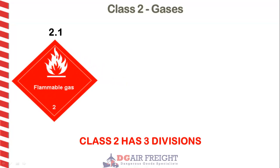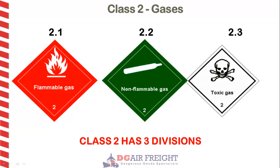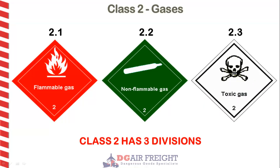Division 2.1 is flammable gas, 2.2 is non-flammable, non-toxic gas, and 2.3 is toxic gas.